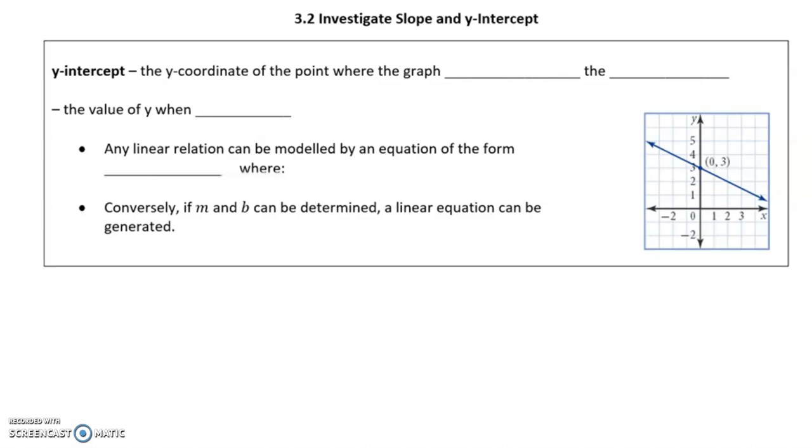Okay, 3.2, investigate slope and y-intercept. So, y-intercept is the y-coordinate of the point where the graph intersects the y-axis. Okay, the value of y when x equals 0.